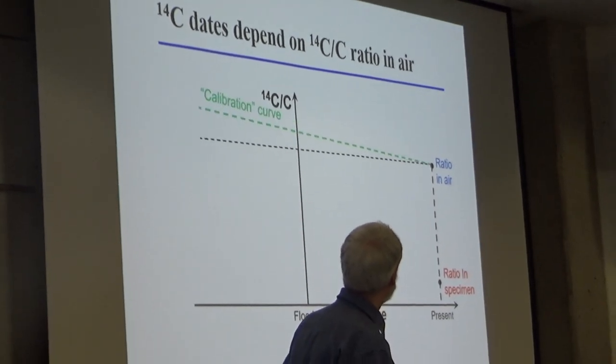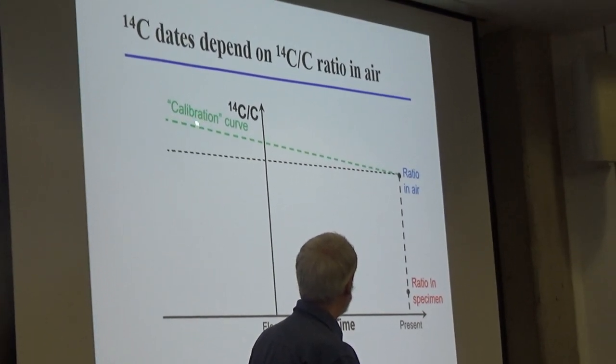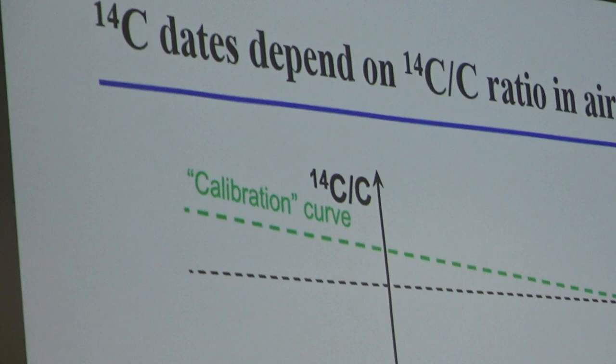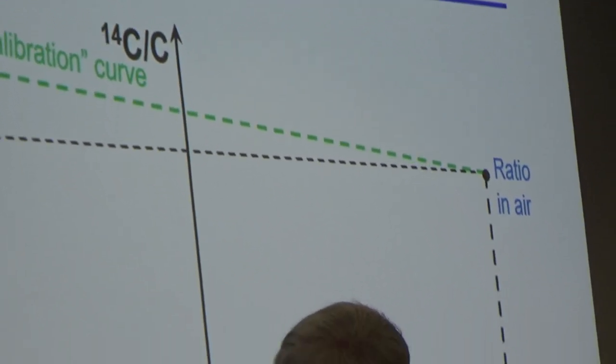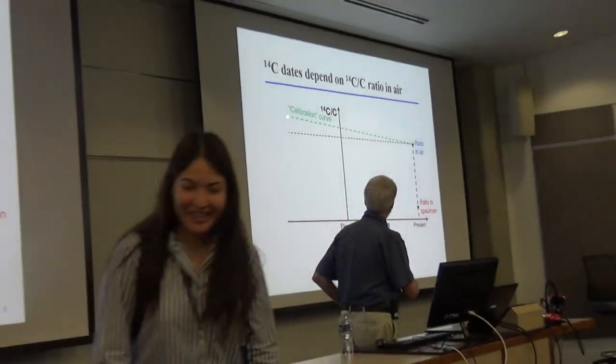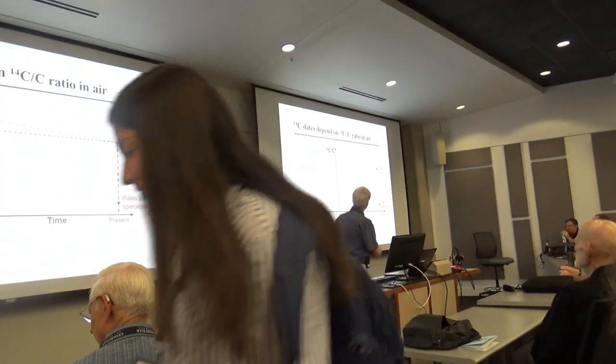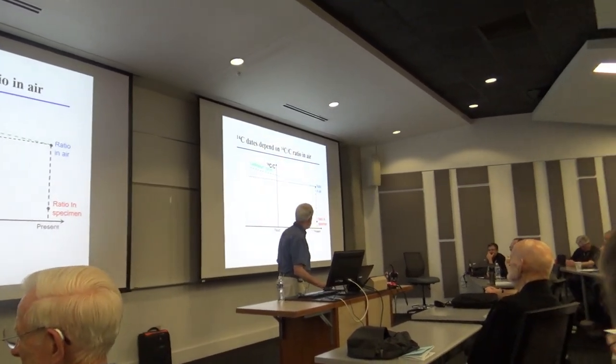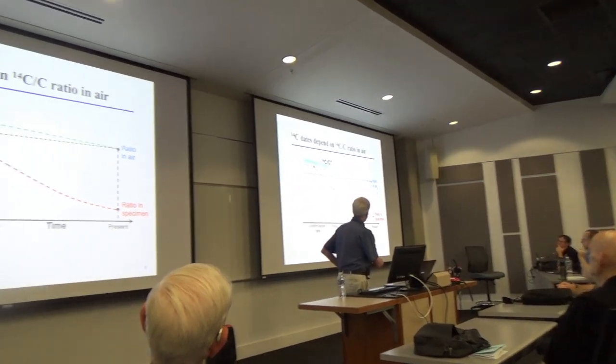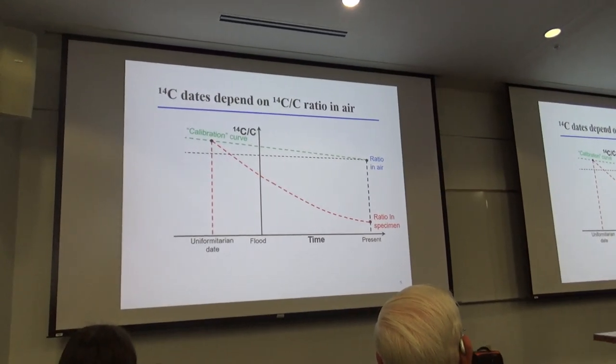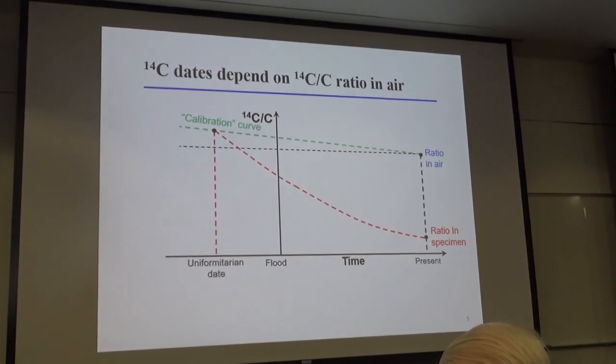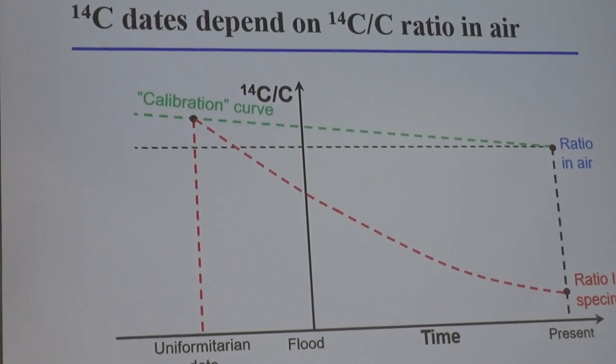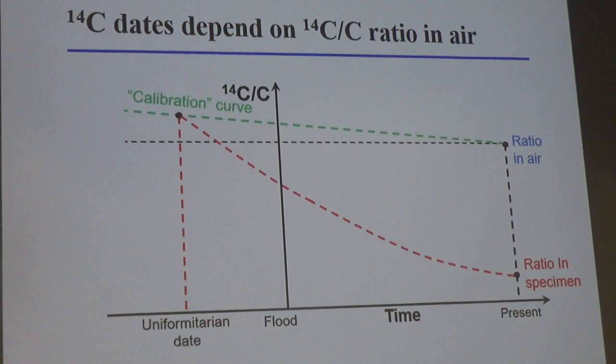They have something they call a calibration curve. Now, I'll talk much more about this near the end of the talk, but it's based upon tree rings and the amount of carbon-14 they find in each ring. So they think the ratio was higher in the past. So how does that affect their date? Here's how they date it. They just extrapolate from the ratio now, and just extrapolate with the decay time of carbon-14. It has about a 5,700-year half-life. They just extrapolate back to this point, and then that's the uniformitarian date.